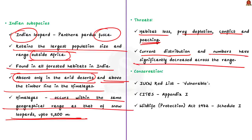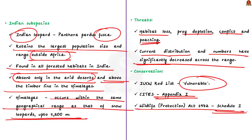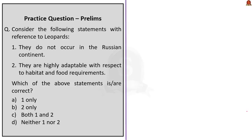In terms of conservation status, the leopard is listed as Vulnerable on the IUCN Red List, and listed in Appendix I of CITES — the Convention on International Trade in Endangered Species of Wild Fauna and Flora. In India, it is provided the highest level of protection under Schedule I of the Wildlife Protection Act of 1972.